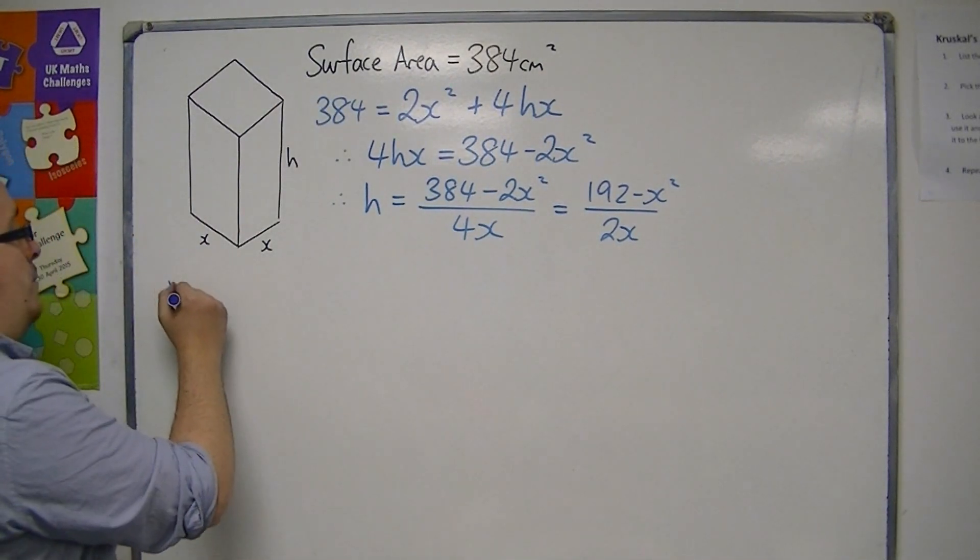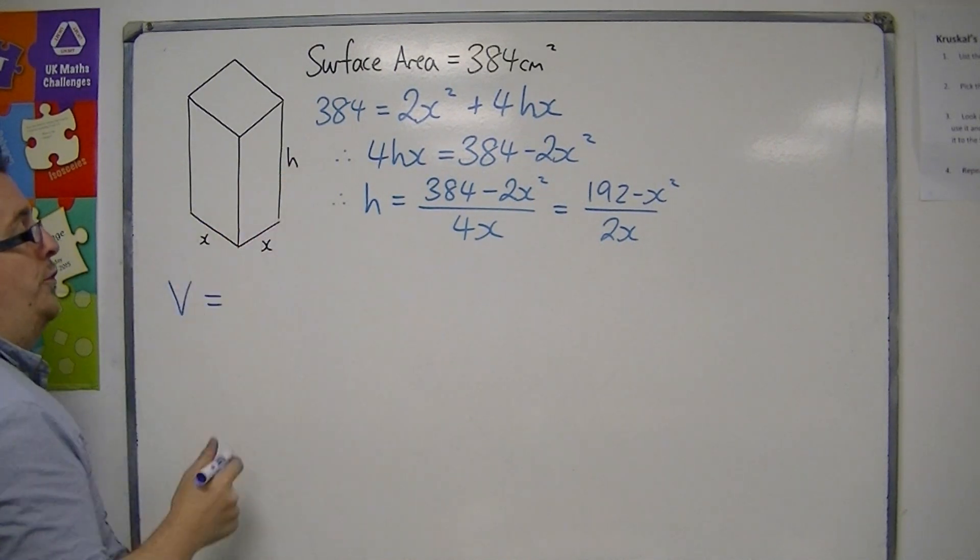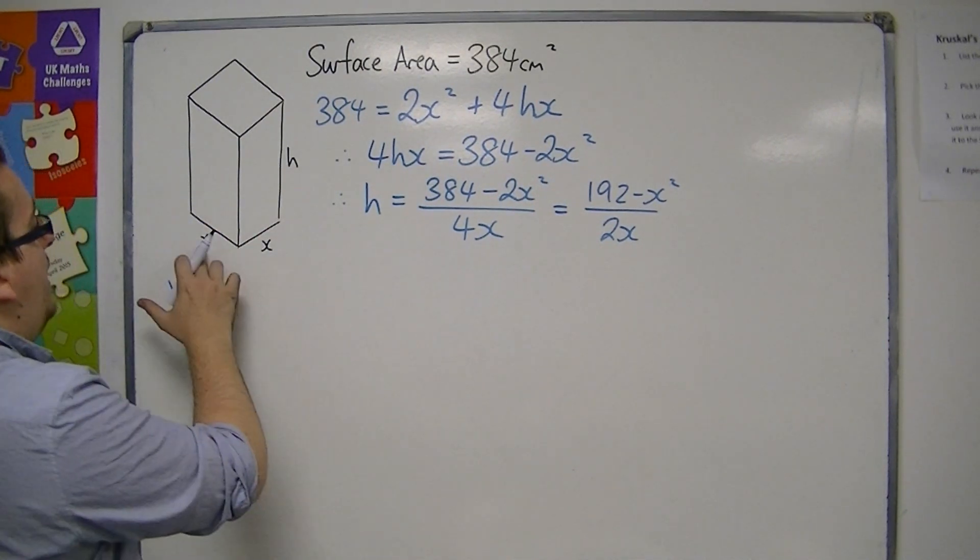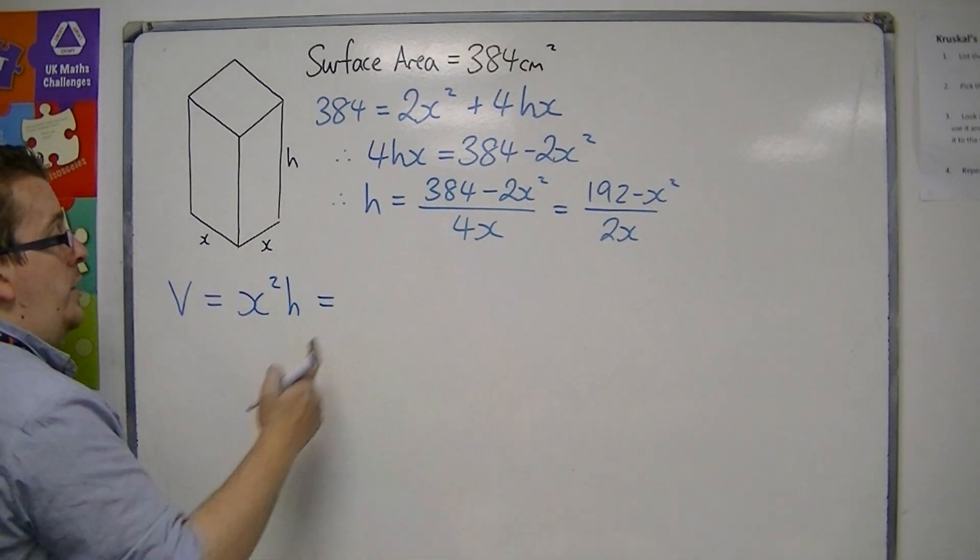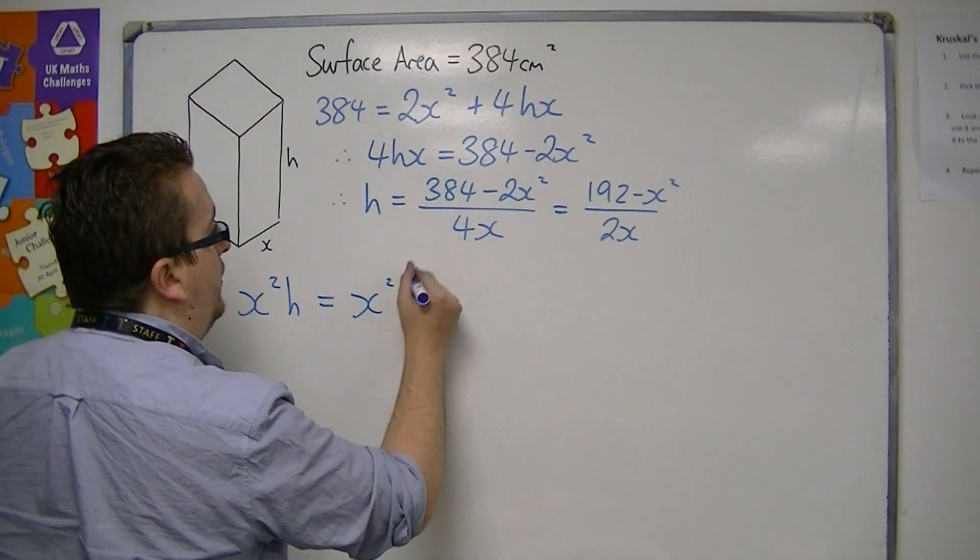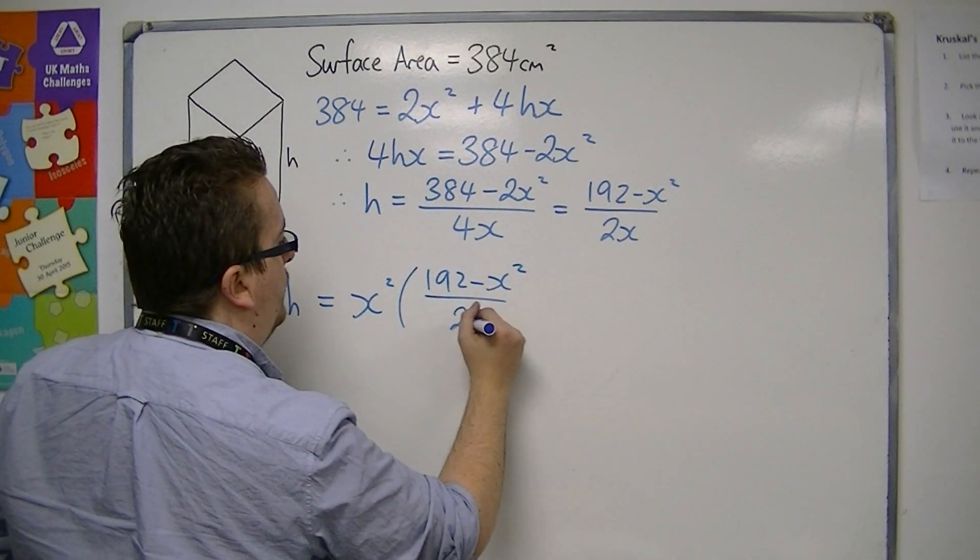So the volume is the three dimensions multiplied together. So we have x squared h. Now I know what h is, so that's x squared times the 192 minus x squared all over 2x.